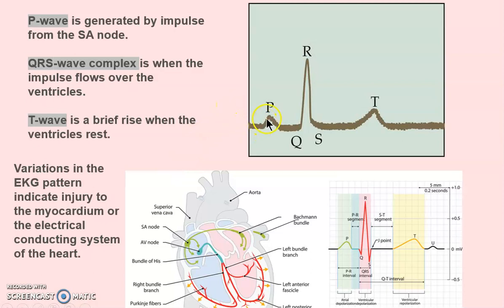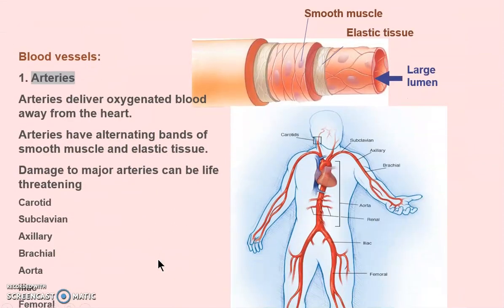On the EKG, the P wave shows that the SA node is working. The QRS complex shows the impulse going across the ventricles, and the T wave shows where the ventricles get to rest. Variations like an inverted T wave suggest that part of the myocardium may be dead — perhaps from a coronary artery problem or an issue with the conducting system or SA node. Further testing is needed.